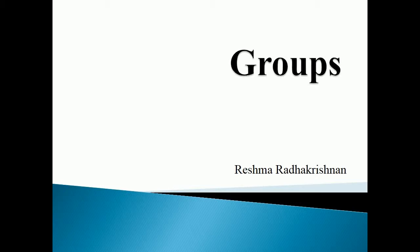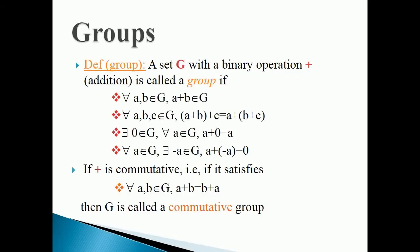Groups, by Reshma Radha Krishnan. Definition (group): A set G with a binary operation + (addition) is called a group if: for all a, b ∈ G, a + b ∈ G (closure); for all a, b, c ∈ G, (a + b) + c = a + (b + c) (associativity);